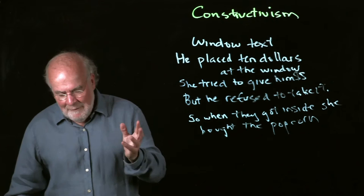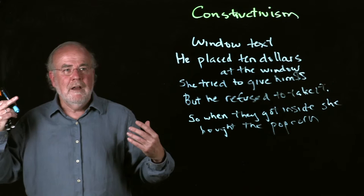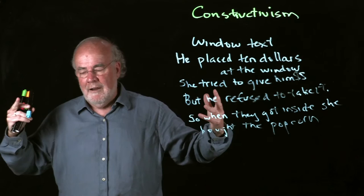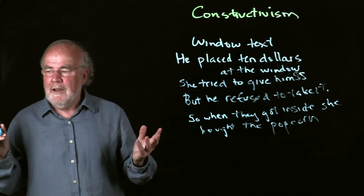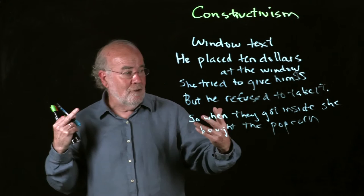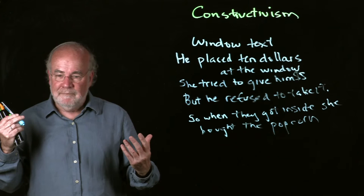If you think about this for a moment, this has so many ramifications for how you deal with a reader. Because as you're dealing with a reader, you find yourself asking the question: How do I uncover the meaning that this person is using at this particular point in time? And if you're looking at a person's reading errors or miscues, as Ken Goodman might, you're going to have difficulty understanding them unless you've got a sense of the meaning that a student is using at particular points in time.